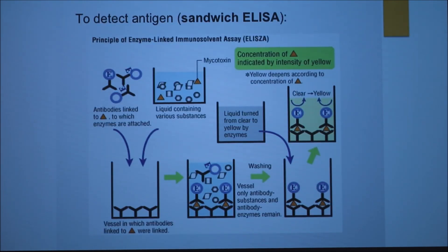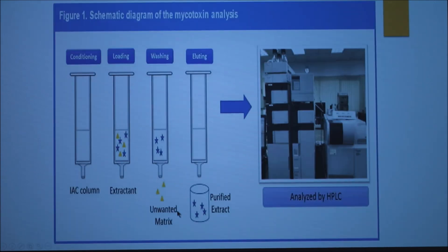Here's an example of a quick test — this is ELISA. And this is an example of high pressure liquid chromatography, which is one of our confirmatory tests.